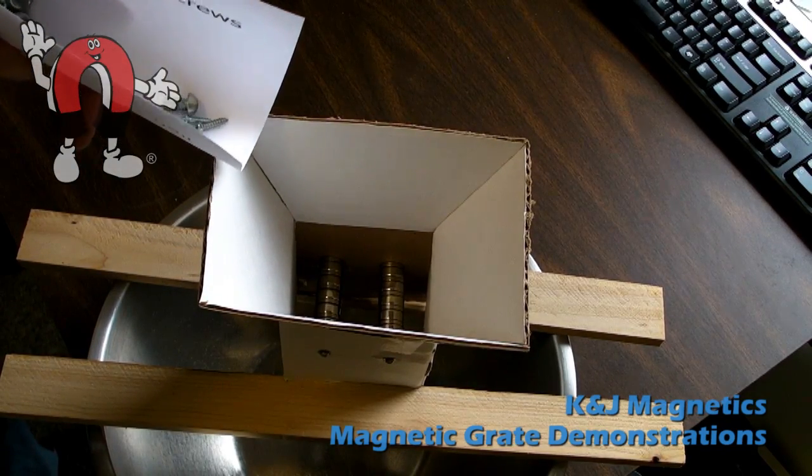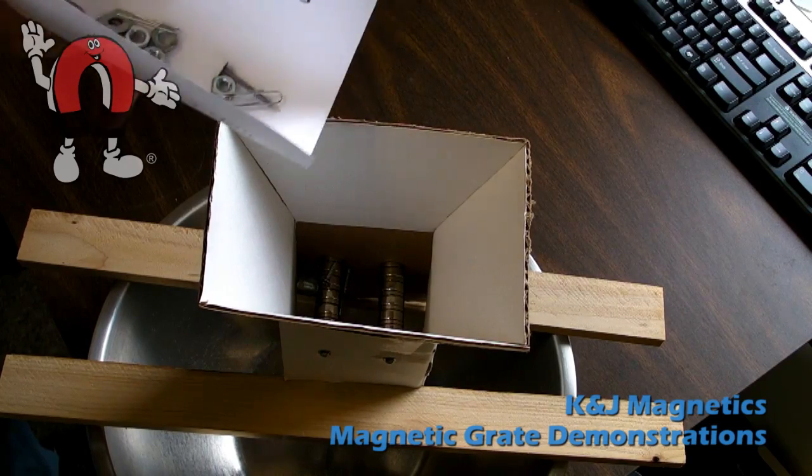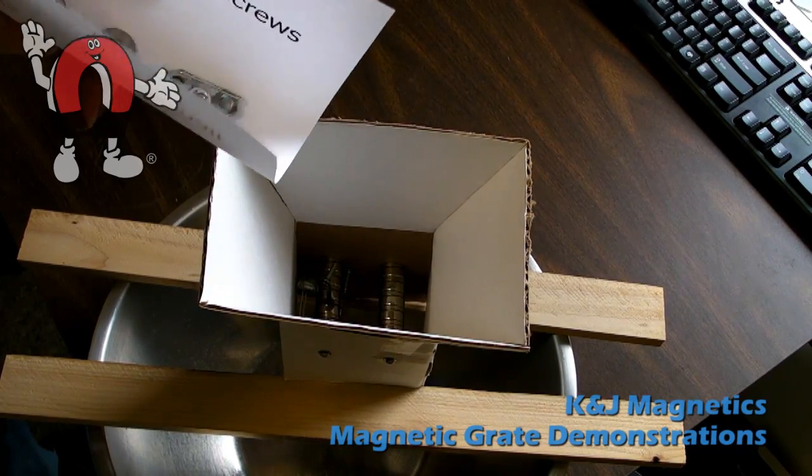You can see we used two bars of magnetic grates, spaced pretty close together. They're about an inch and a quarter, inch and a half apart.